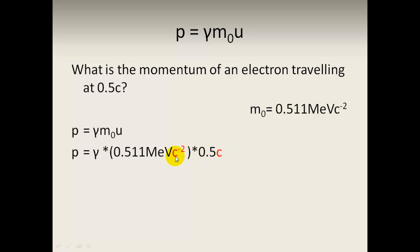Notice that we keep the units when we're doing this, so c to the minus two times by c, and we're going to end up with gamma times 0.5 times 0.511 MeV per c or c to the minus one. Notice how we will get a unit of momentum which is MeV c to the minus one. You need to find out what gamma is, multiply by 0.5 and 0.511, and you can do that.